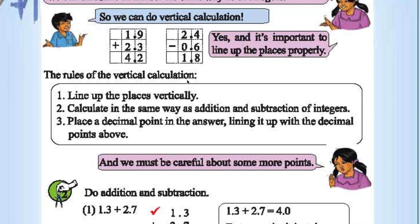The rules of vertical calculation are: line up the places vertically as shown, calculate in the same way as addition and subtraction of integers, and place a decimal point in the answer lining it up with the decimal points above, like here.